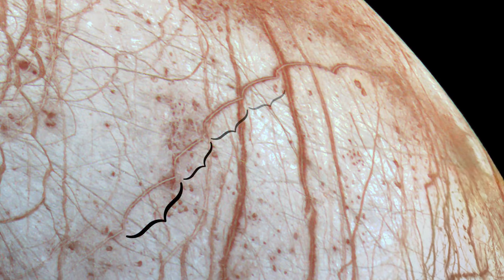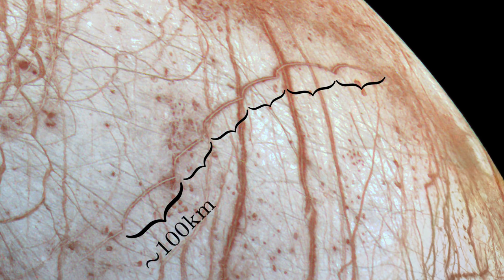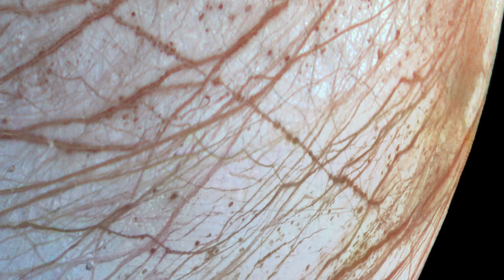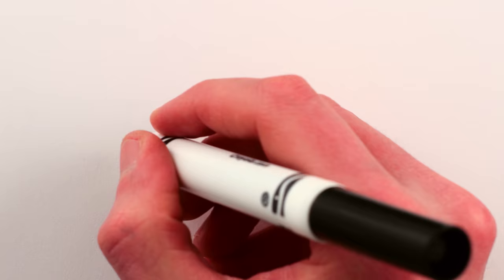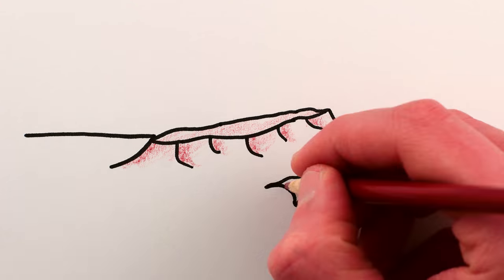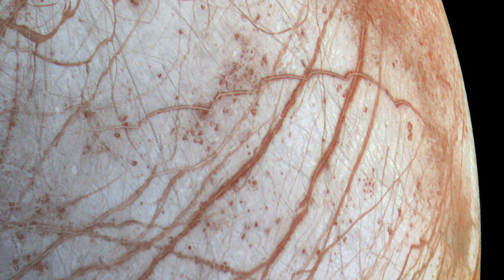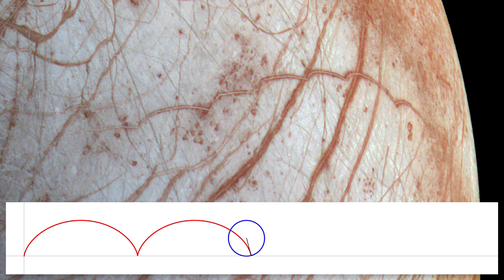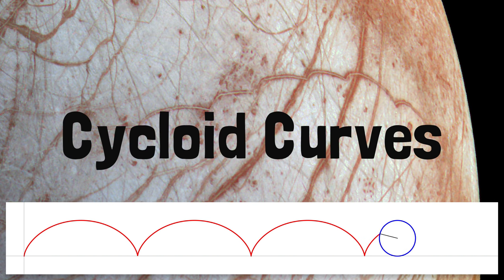But I want to direct your attention to this weird repeating arc pattern. Each segment of arc is roughly 100 kilometers long, and there are a lot of these arc patterns. Most of them are ridges raised up above the surrounding surface, though a few are troughs. After they were discovered, their shape reminded scientists of a mathematical curve called a cycloid, so the Europa curves are called cycloid curves.